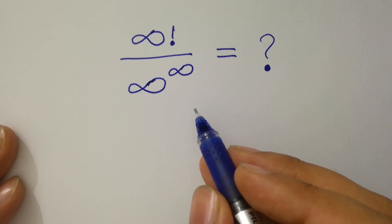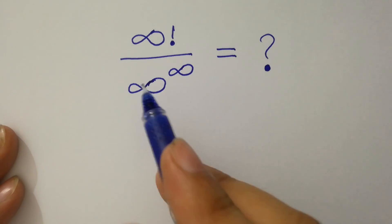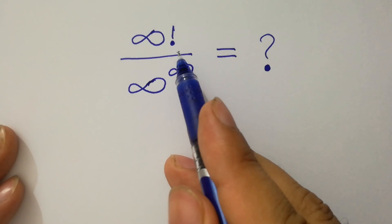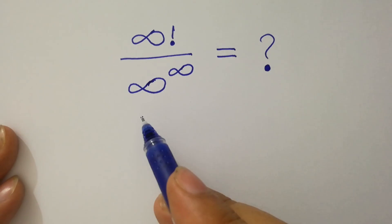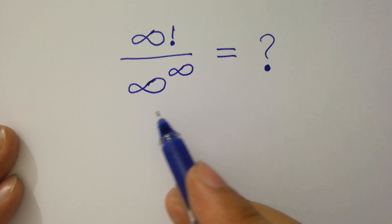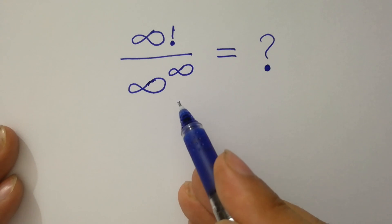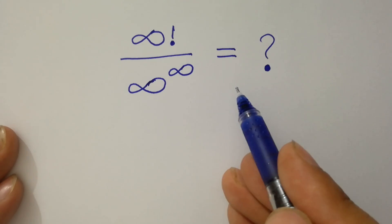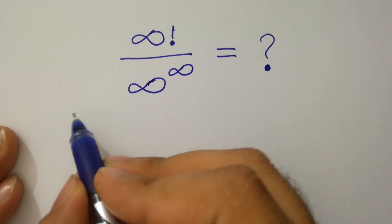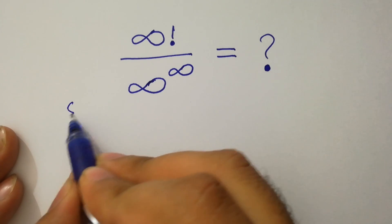Hello friends. Infinity factorial over infinity to the power infinity is equal to what? Let's have a solution.